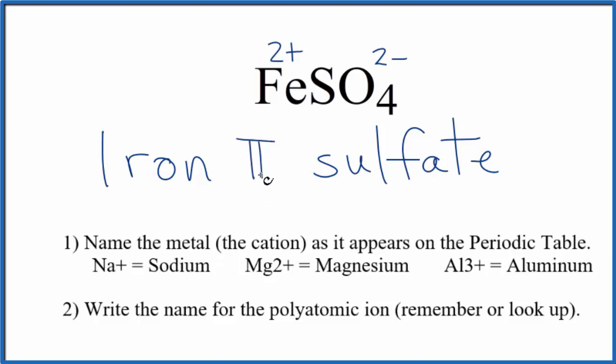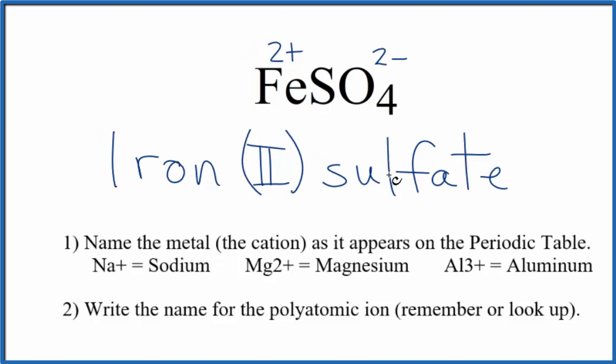So we write a Roman numeral 2 and we put it in parentheses. So the name for FeSO4 is iron 2 sulfate.